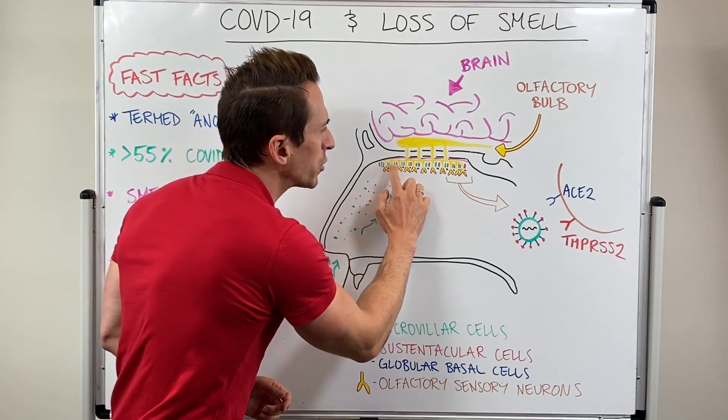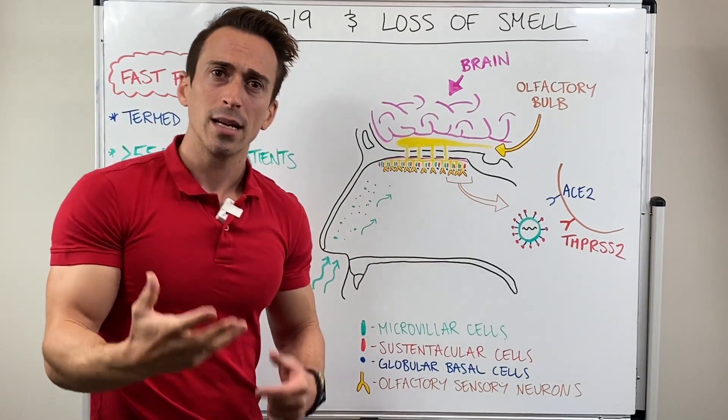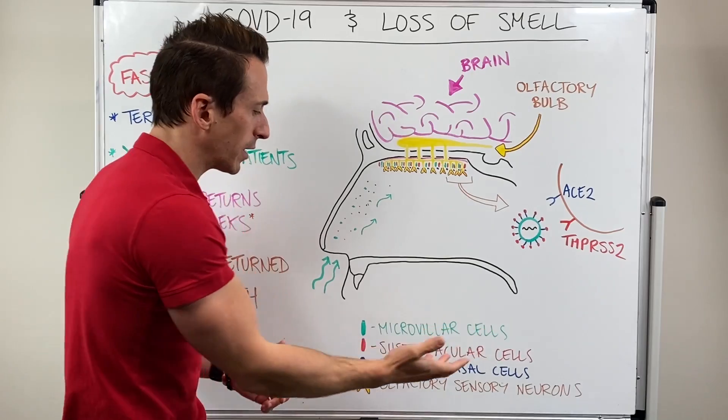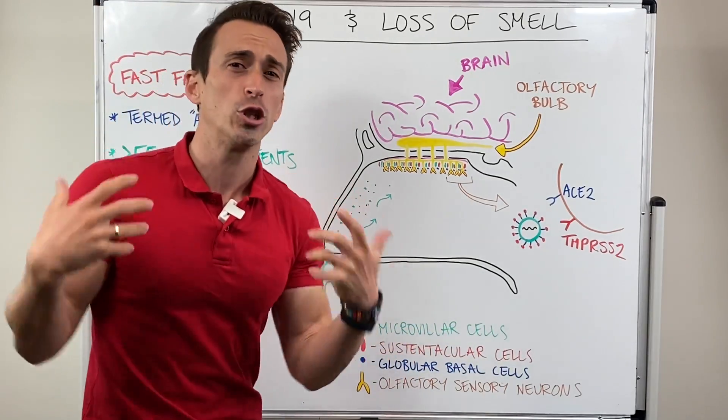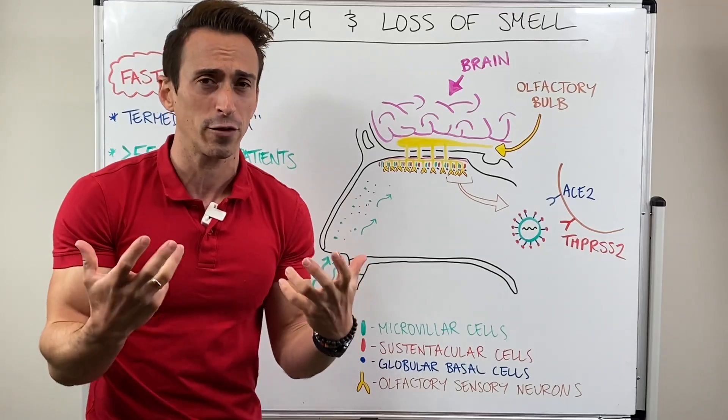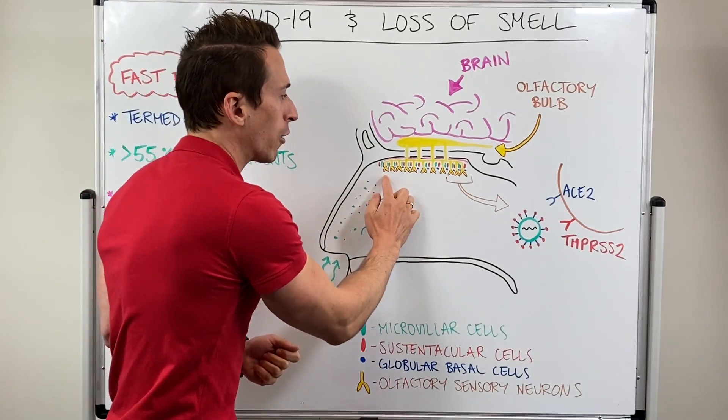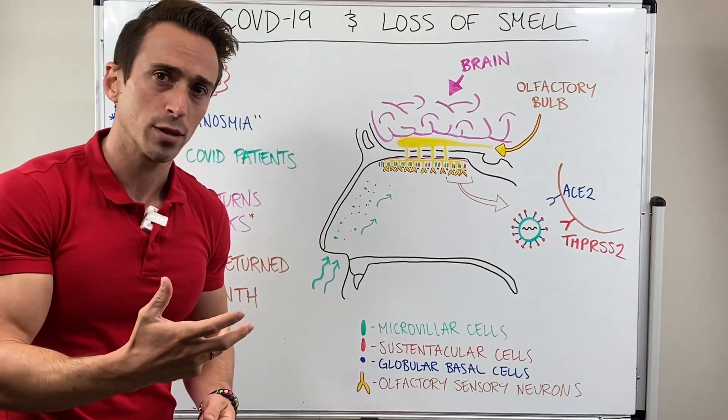There's actually a whole bunch of other cells present called supporting cells. These supporting cells can include microvilla cells, sustentacular cells, globular basal cells, and olfactory ensheathing cells. There's a whole bunch of different cells that support the role of the olfactory sensory neurons.